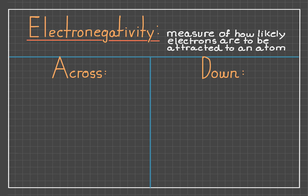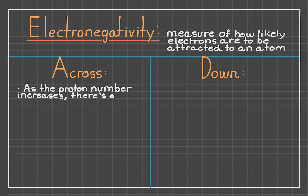So first, let's talk about electronegativity. Electronegativity is a measure of how likely atoms are to be attracted to an electron. To find the periodic trend, we'll first look at how electronegativity of an atom changes as we go across the table, and then we'll explore how it changes as we go down, and we'll do this for all the trends.